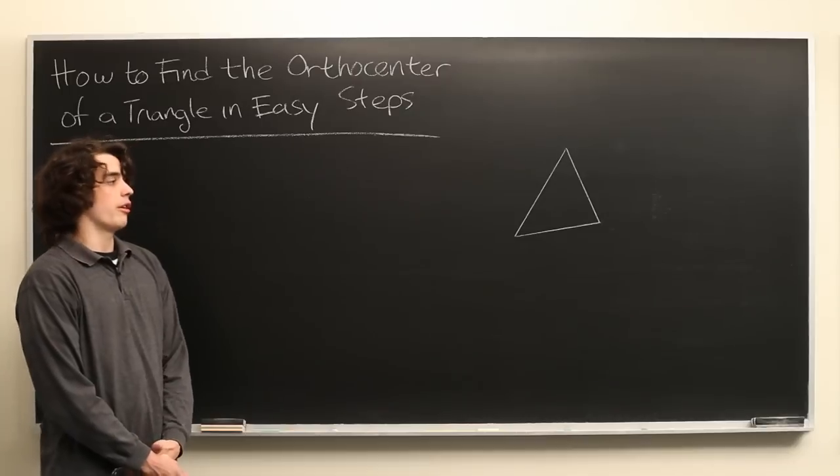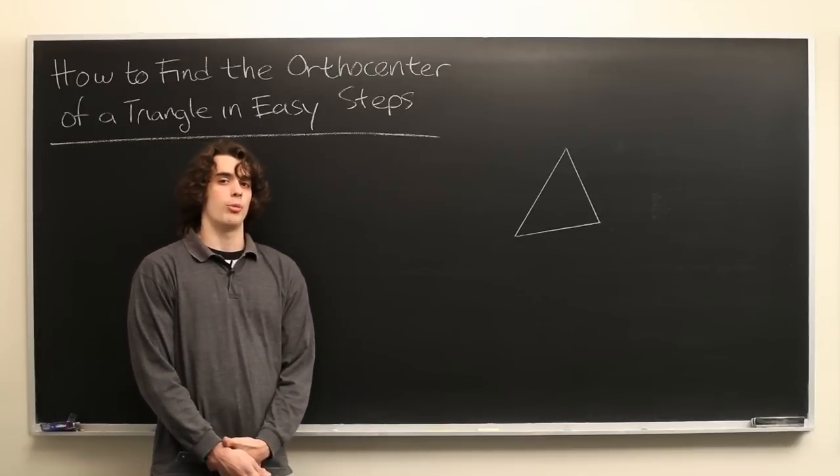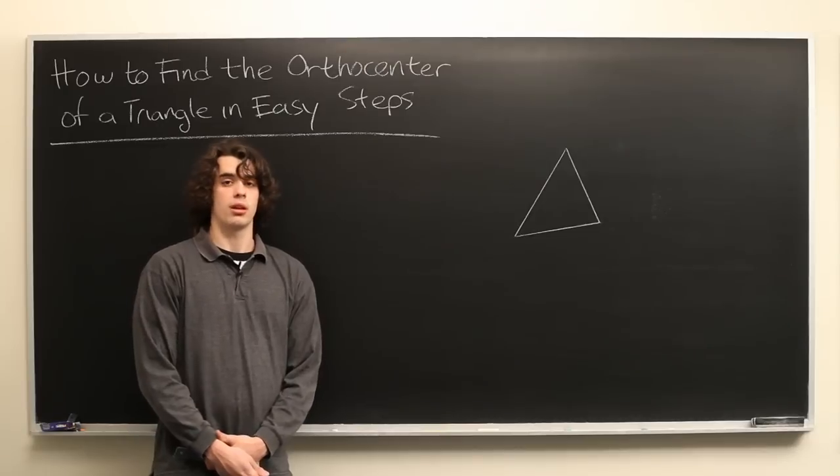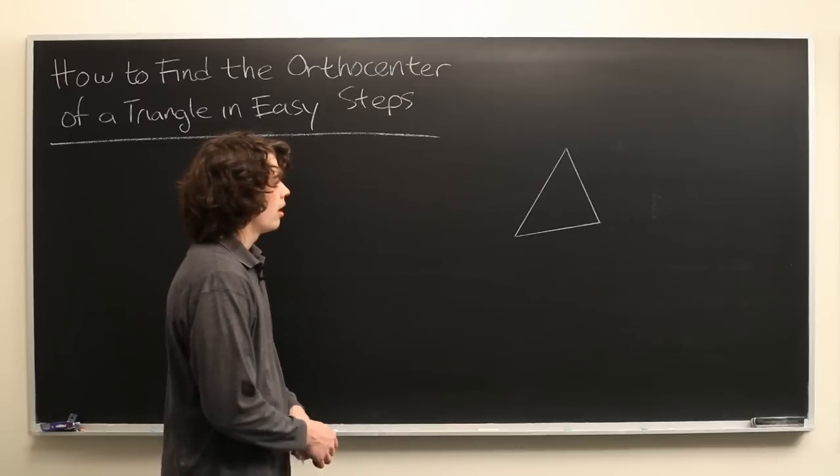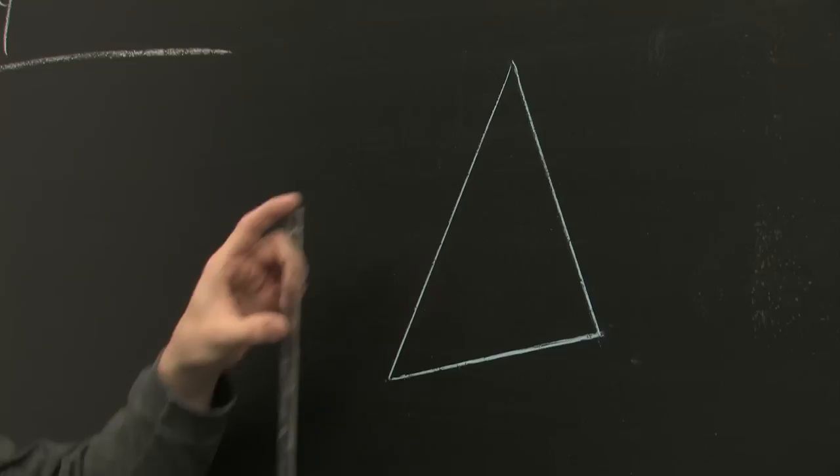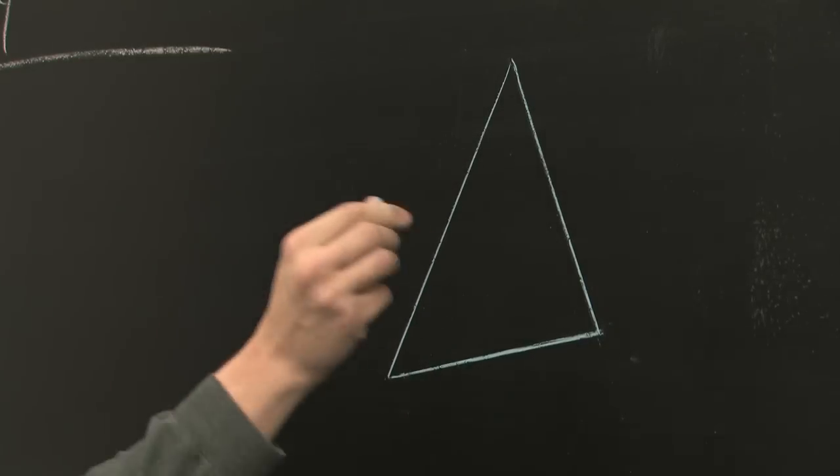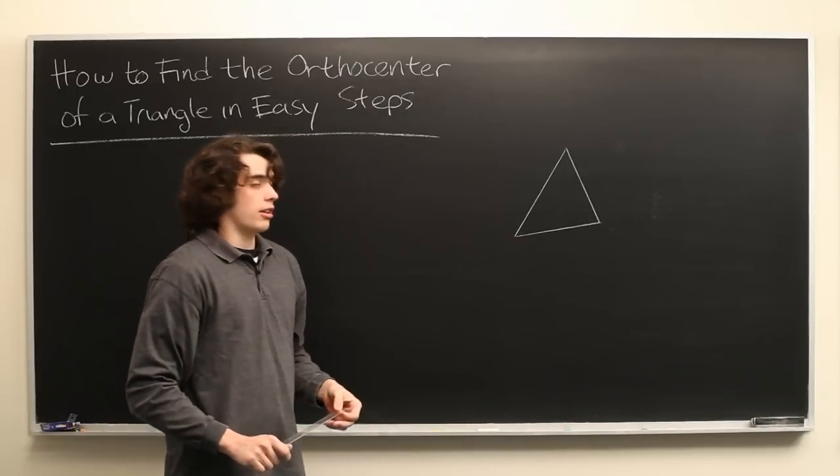Now the orthocenter of a polygon is one of several geometric interpretations of the center of the polygon. It is found by taking altitudes of all the sides and then connecting them at a single point.